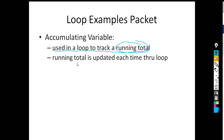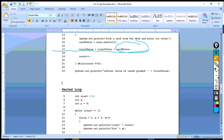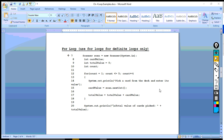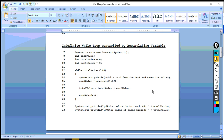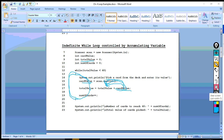The running total is updated each time through the loop, and that's why it's important that you make sure this is inside the body of the loop. Here we have an accumulating variable called total_value — it's a running total of the value of the cards being picked. The first time through the loop, the user is told to pick a card, they enter the value, and that card value gets added on to the accumulating variable. Every time through the loop it adds on to it, and so it keeps accumulating more and more.